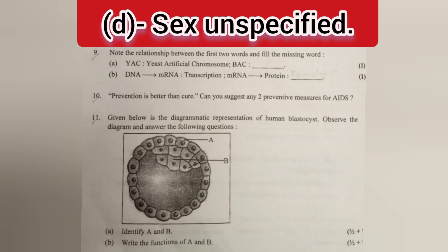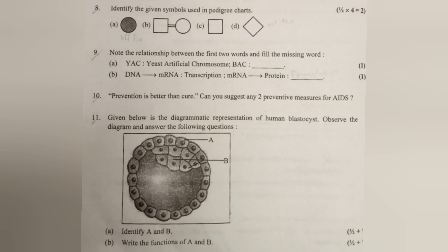D. Sex unspecified. Question 9: Note the relationship between the first two words and fill in the missing word. A. YAC: Yeast Artificial Chromosome — BAC: